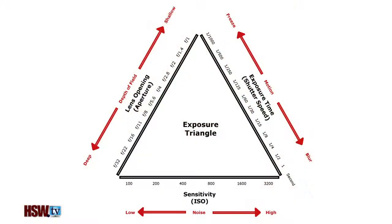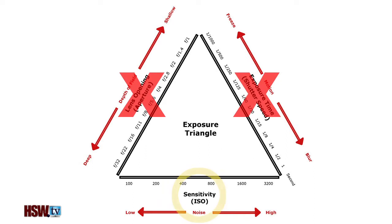ISO also comes into play as a control that you can adjust instead of aperture or shutter speed. Sometimes you just can't change your aperture or shutter speed — say you need a certain depth of field or you need to freeze the action. Your only choice is to change your ISO.